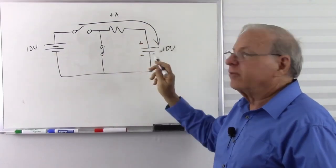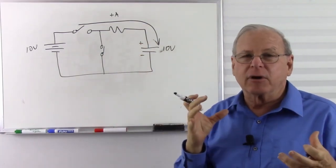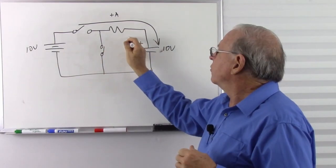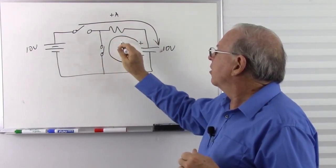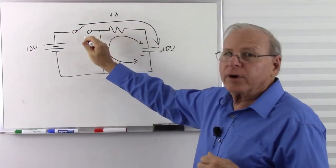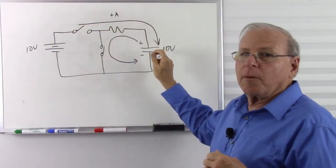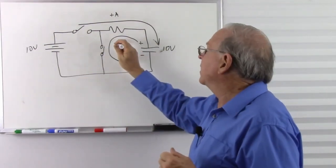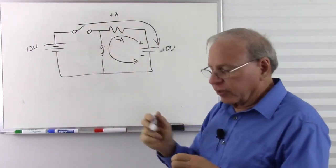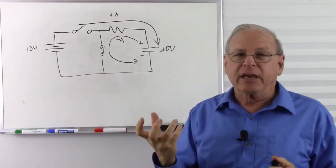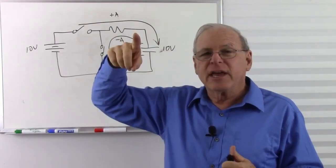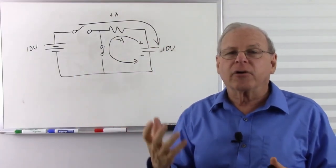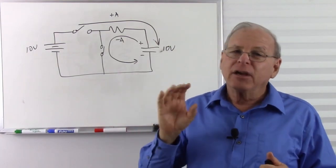Now I'm going to open this switch to stop the charging, then close the discharge switch. Now this looks pretty much like a battery — positive to negative. It doesn't have a chemical energy store, but it has enough energy to discharge. The current is going to flow the opposite way as it discharges, and notice that now the current is flowing the opposite direction through the resistor. So we have current flowing that way — we'll call that negative current. The conventional current has reversed direction, so when charging it goes positive, and when discharging it goes negative.